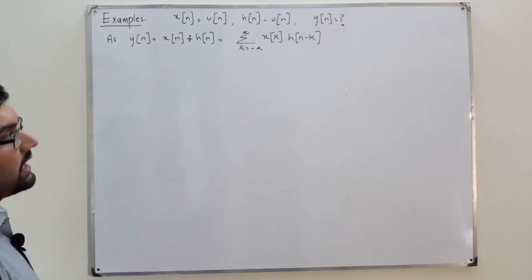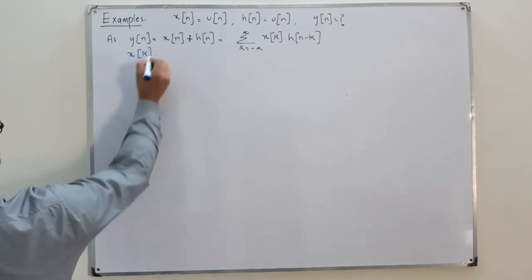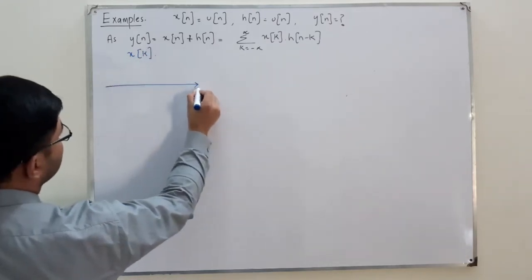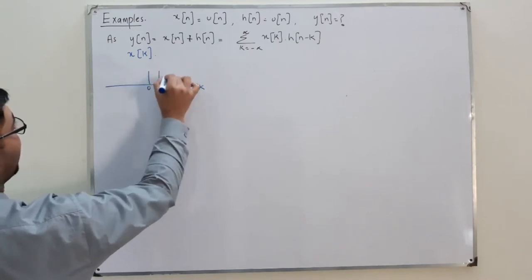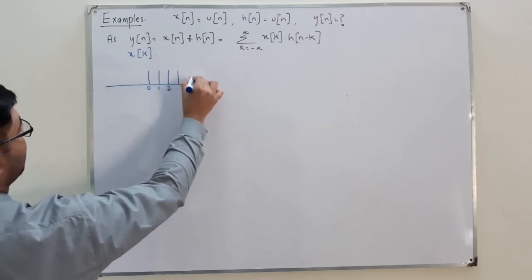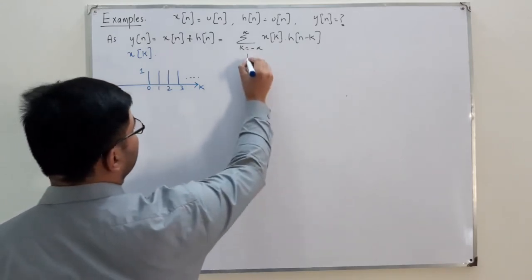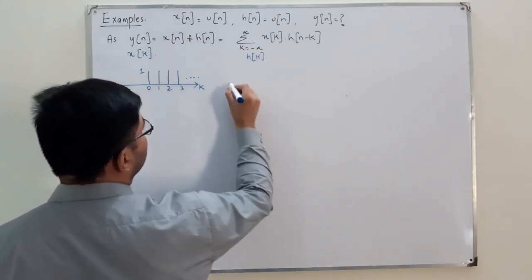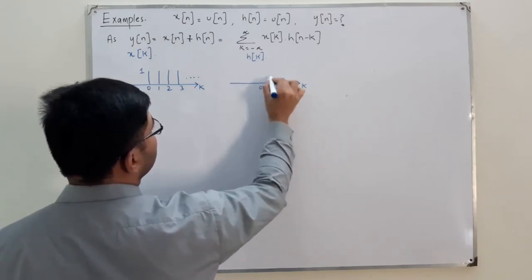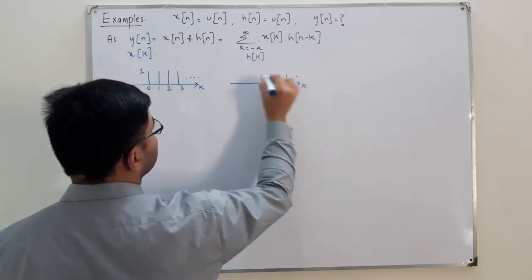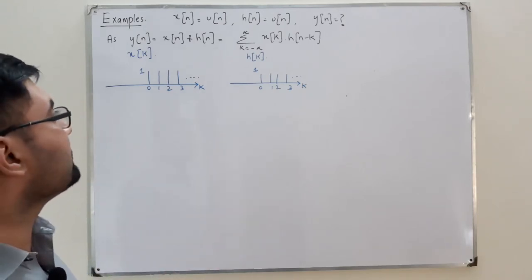x(k) is the same as x(n). If the k-axis goes from 0, 1, 2, 3 and so on, it has value 1. Similarly, h(k) is the same signal: from 0, 1, 2, 3 going to positive infinity with value 1.